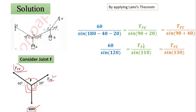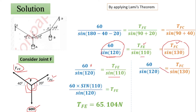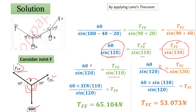Now we find the unknown values of TFE and TFC. Comparing the first and second terms: 60 divided by sine 120 equals TFE divided by sine 110. Cross-multiplying gives TFE equal to 65.105 Newton. Then equating 60 divided by sine 120 with TFC divided by sine 130: cross-multiplying gives TFC equal to 60 times sine 130 divided by sine 120, so TFC equals 53.073 Newton.